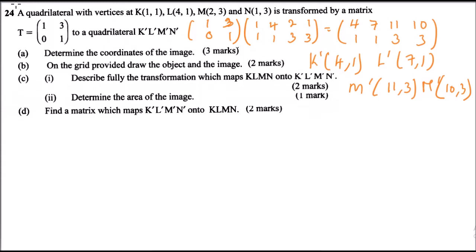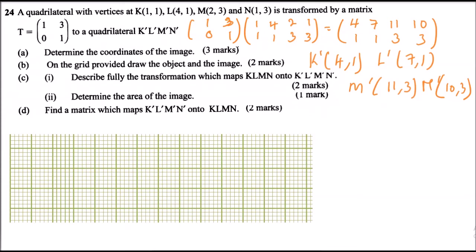On the grid provided, draw the object and the image to get marks. I have inserted a grid — because of space, this portion will be enough for my graph. I have calculated that the highest value of x is 11 and the highest value of y is 3. The y-axis goes from zero to three, and the x-axis goes from one up to twelve.